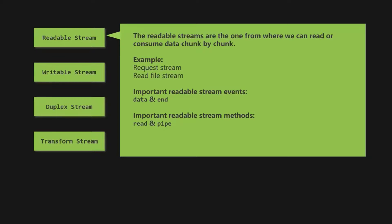In the case of readable streams, the two most important events are the data event and the end event. The data event is emitted when there is a new chunk of data to consume — for example, when reading a file using read stream, whenever a new chunk is read and available, the data event is emitted. The end event is emitted when there is no more data to consume — once all chunks have been received, the end event is raised and we can react to it accordingly.